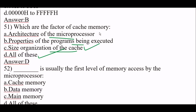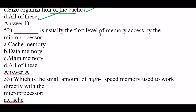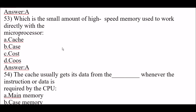Next question: which is usually the first level of memory accessed by the microprocessor? The right answer is option A, cache memory. Cache memory is usually the first level of memory accessed by the microprocessor. Next question: which is the small amount of high-speed memory used to work directly with the microprocessor? The right answer is option A, cache.